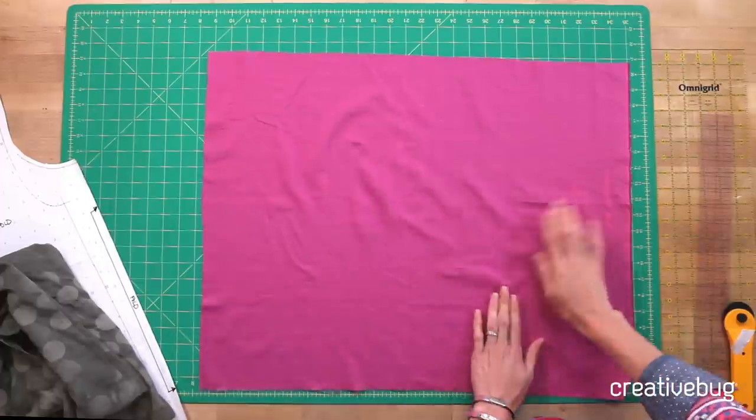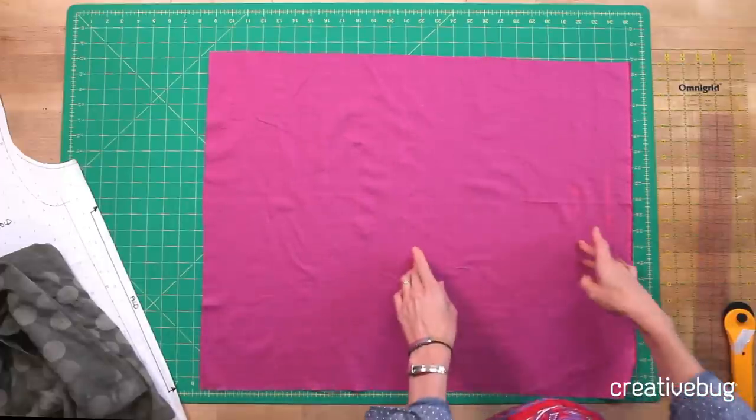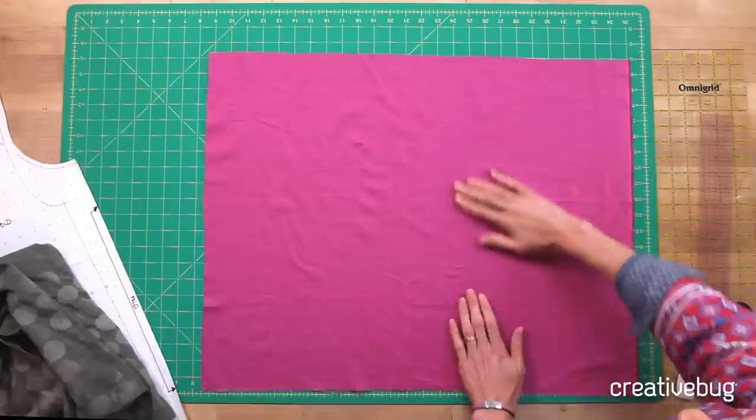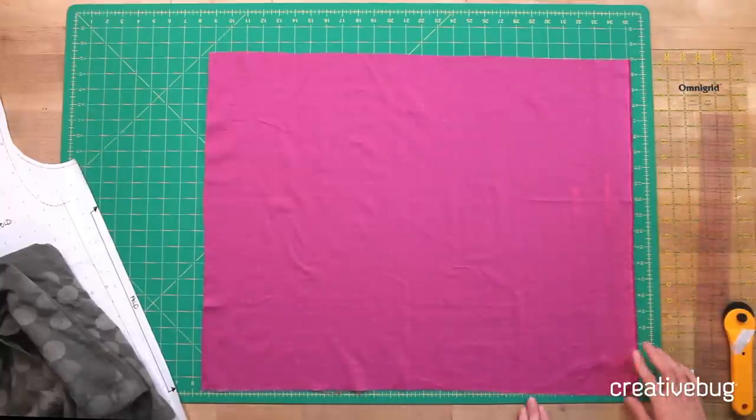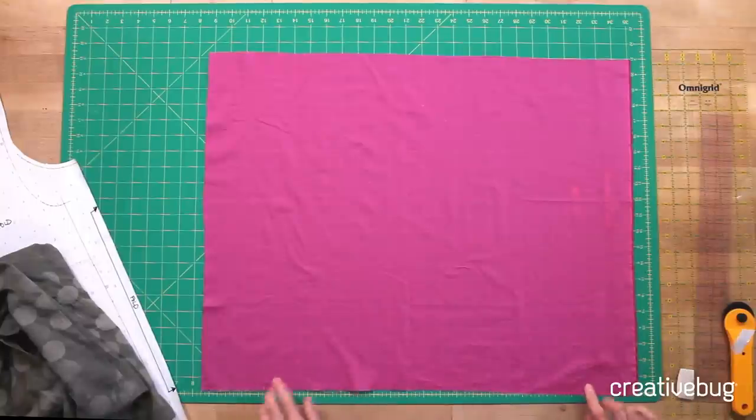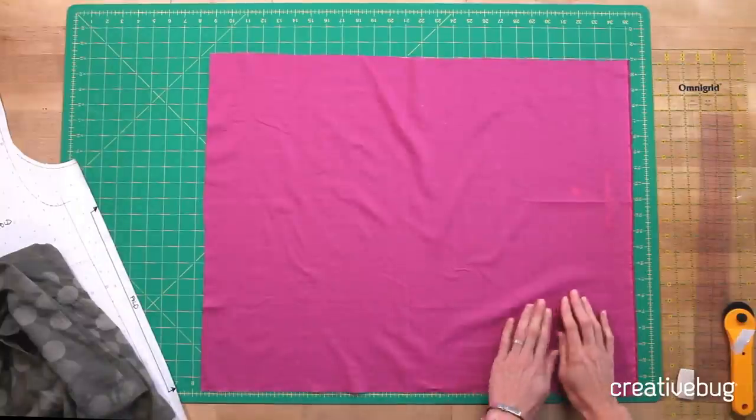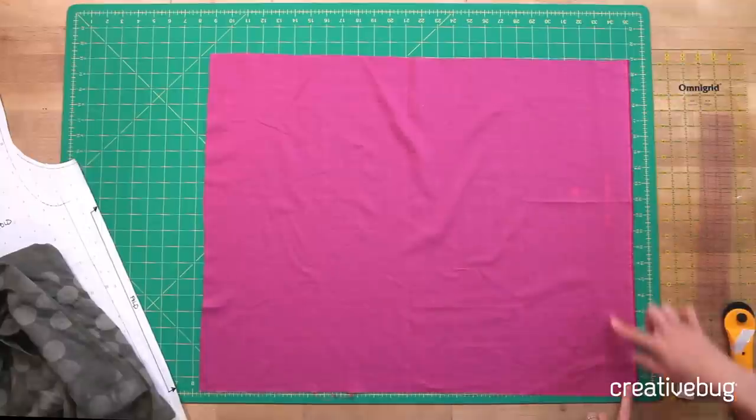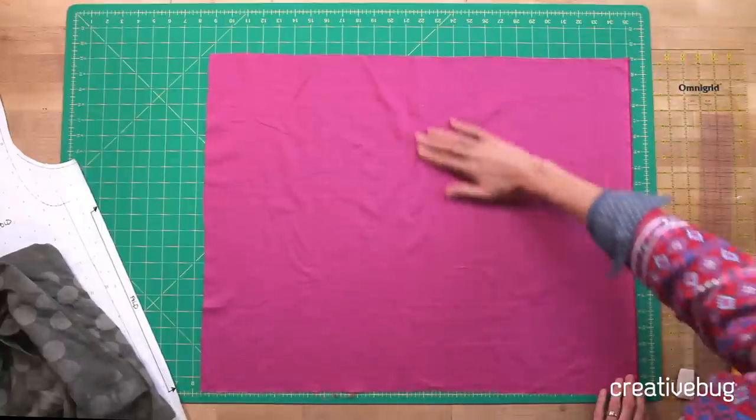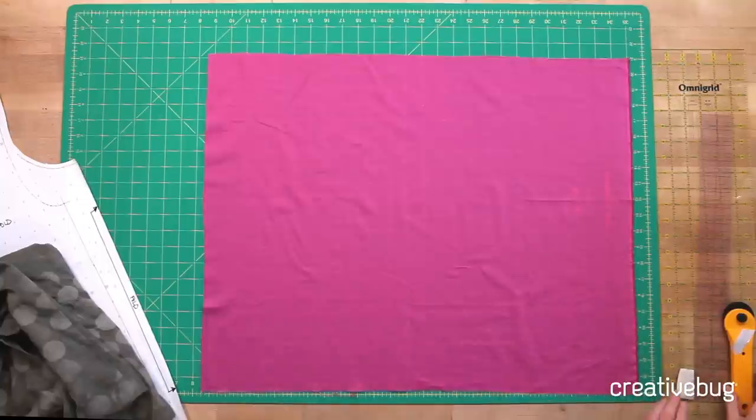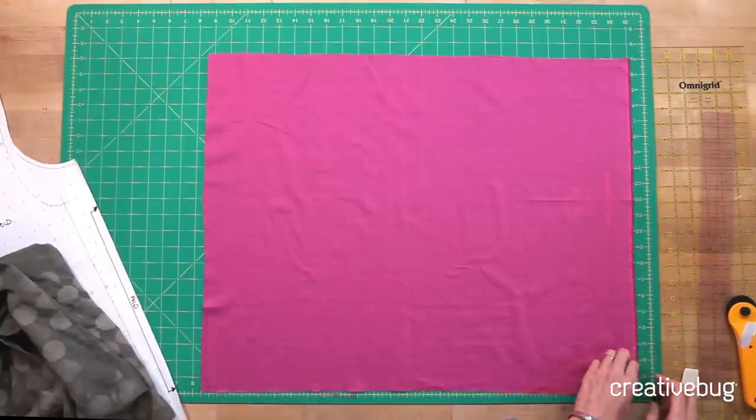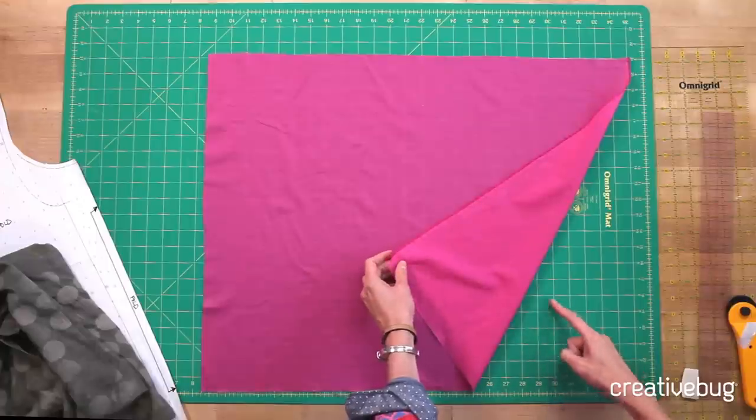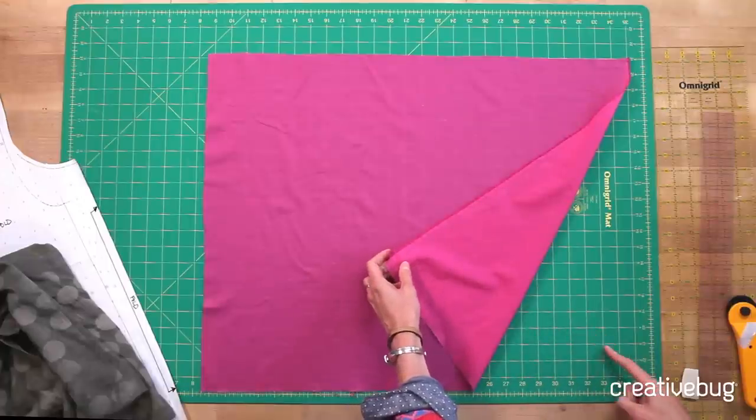I'm going to cut my strips of bias to apply to the neckline. I've torn or pulled a thread at the cross grain, so I know the fabric is running on grain along this edge. I'll position it on my cutting mat just like this. There's a nice grid on my cutting mat. If I can see through it, you can actually cut right along from corner to corner, and that will be your bias.